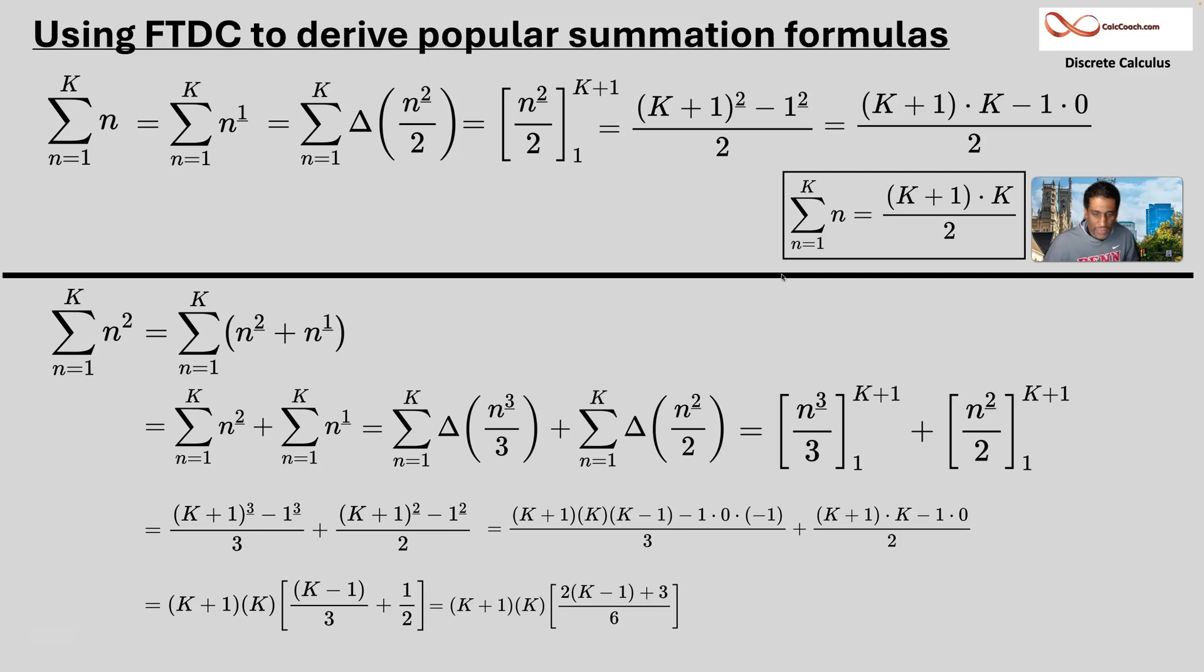So double everybody in the first fraction, triple the one half, top and bottom. Distribute 2k minus two, but then plus the three gives us 2k plus one. This is the famous formula for the sum of the first k squares. 2k plus one times k plus one times k all over six.